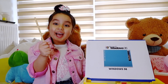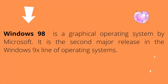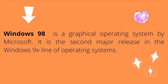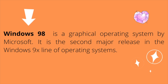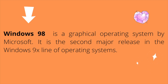The next version of Windows is Windows 98. It's a graphical operating system by Microsoft. It is the second major release in the Windows 9X line of operating systems.